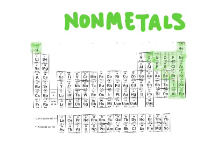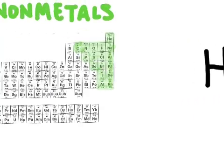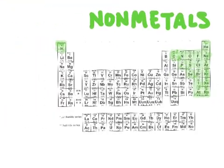Let's look at an example of a covalent bond. Here we have two non-metals: hydrogen and chlorine, and I've drawn the Lewis structures for both of these elements. Chlorine, over here on the periodic table, is in group seven and has seven valence electrons. Hydrogen, the only non-metal on the left side of the periodic table, has one valence electron because it's in group one.